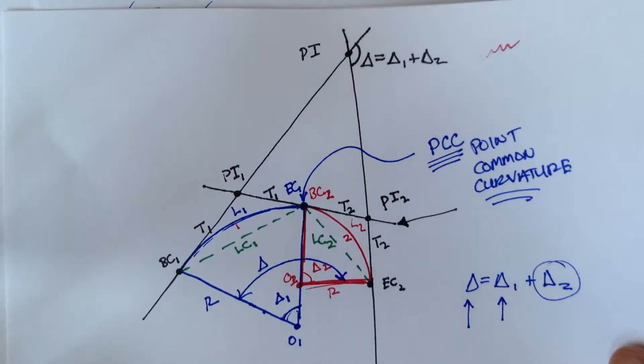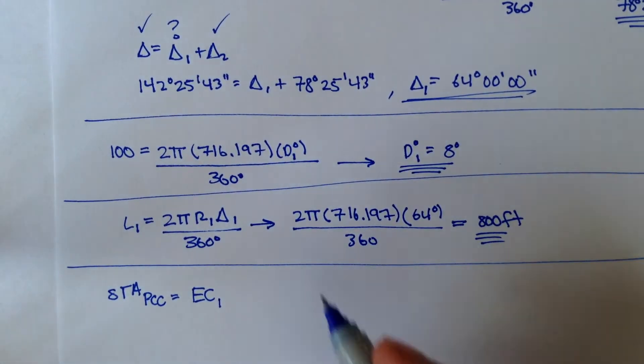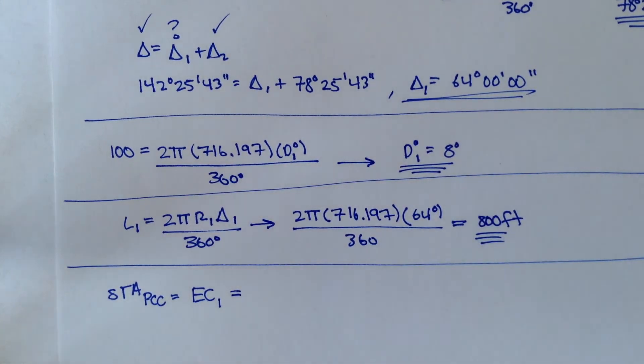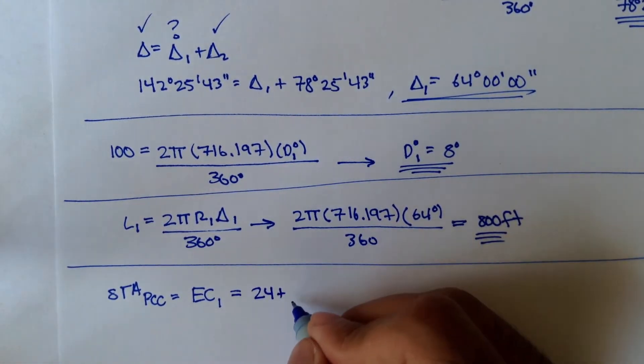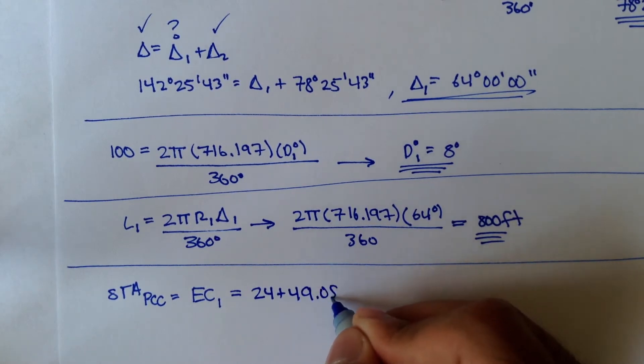First, we have EC1. EC1 is equal to the station for the point of common curvature, and remember that was 24 plus 49.080.